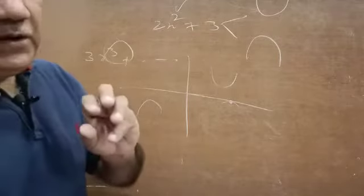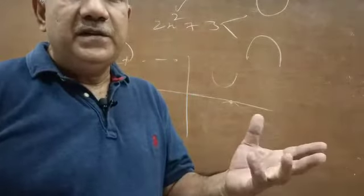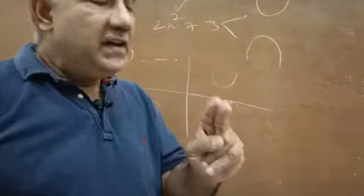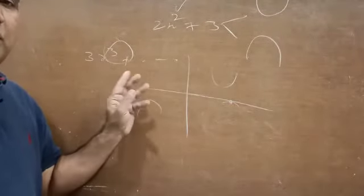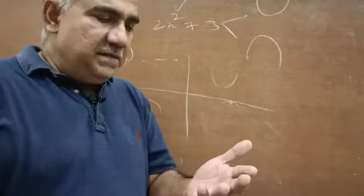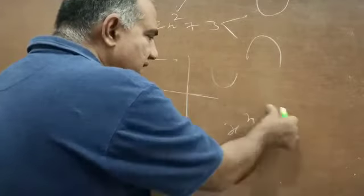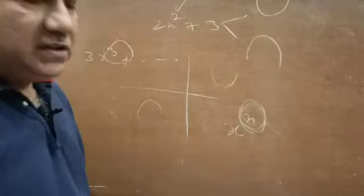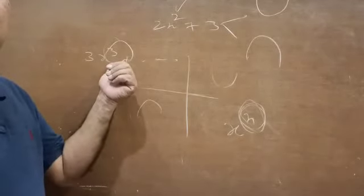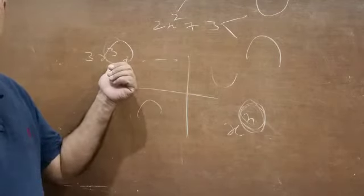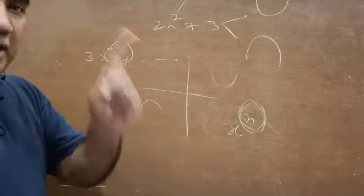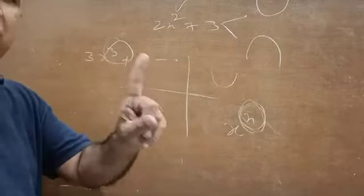Similarly for a cubic polynomial — if you have a polynomial whose degree is odd, say 1, 3, 5, it will at least have one real zero. A cubic polynomial may have one zero, two zeros, or three zeros, but cannot have more than three. In general, if you have a polynomial whose degree is n, the maximum number of zeros it can have is n.